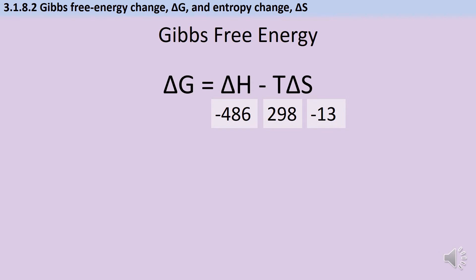But wait, I just said kilojoules per mole and entropy is in joules per mole per Kelvin. So first I need to convert this by dividing by a thousand. Much better. Now if I multiply that by the temperature, I can say that overall my change in Gibbs free energy will be minus 486 take away negative 3.874, which gives me a final value for ΔG of minus 482.126, so at room temperature this reaction is feasible.